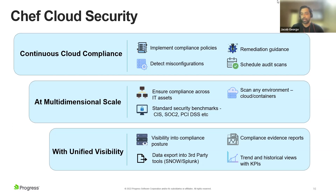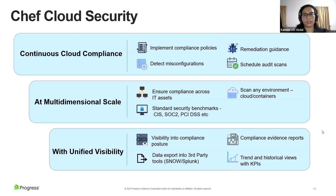Essentially, you find a misconfiguration within a particular cloud infrastructure — it'll alert in ServiceNow or Splunk, and the appropriate team will be able to take remediative action. That's what we mean by continuous cloud compliance at multi-dimensional scale with unified visibility. In a nutshell, that is what Chef Cloud Security is.